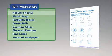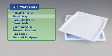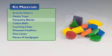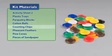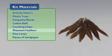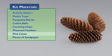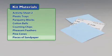From the kit, you will need Activity Sheet 2, plastic trays, parquetry blocks, cotton balls, counting chips, pheasant feathers, pine cones, and pieces of sandpaper.